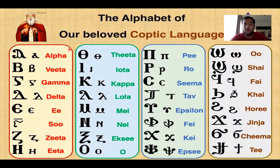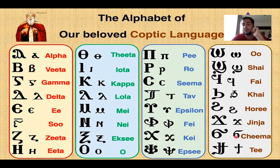So let's start with the alphabet. Alpha, vita, gamma, delta, iso, zita, iita, theta, jota, kappa, lola, meni, xe, o, pyro, sima, tab, epsilon, fi, k, ipsi, o, shai, fai, chai, hori, ganga, shi, ma, ti.